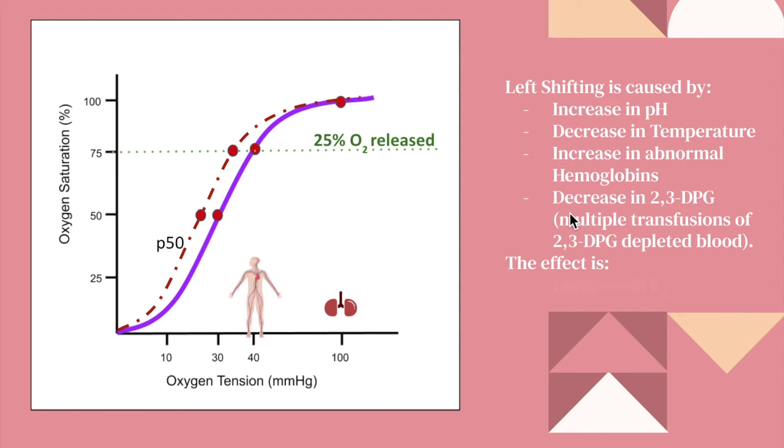So the effect of left shifting is your P50 value decreases. So before, P50 was around 26 to 30 normally on baseline. But after the adjustment of left shifting, it decreases. It decreases down to probably 25, 24. Point is, the effect of left shifting is that P50 decreases too.